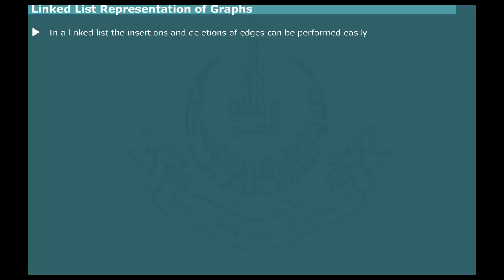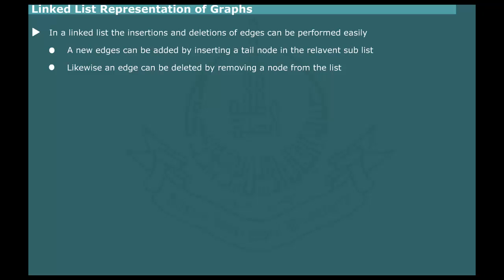The operations of insertion and deletion of edges can be easily performed on the Link List representation. A new edge can be added by inserting tail node in the relevant Link List. An edge can be deleted by removing a node from the list.